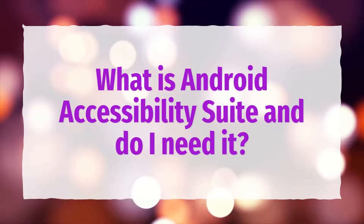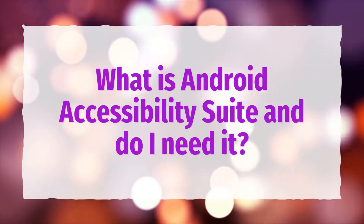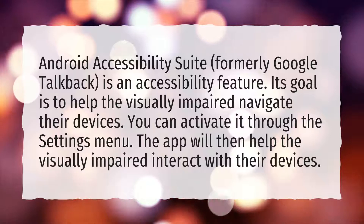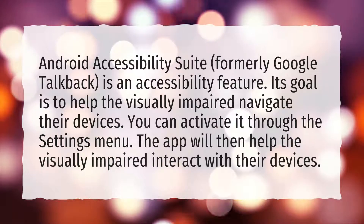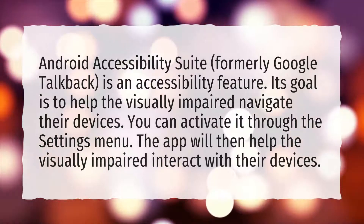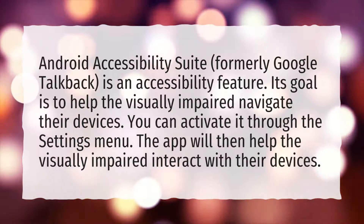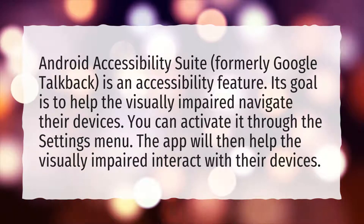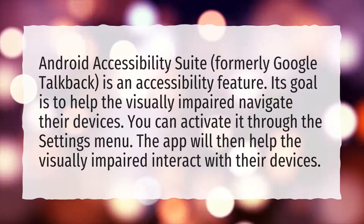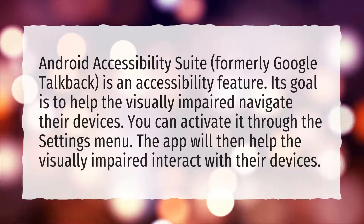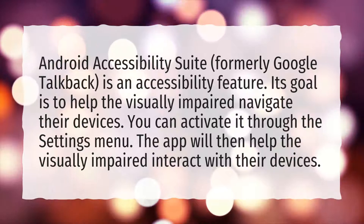What is Android Accessibility Suite and do I need it? Android Accessibility Suite, formerly Google Talkback, is an accessibility feature. Its goal is to help the visually impaired navigate their devices. You can activate it through the settings menu, and the app will then help the visually impaired interact with their devices.